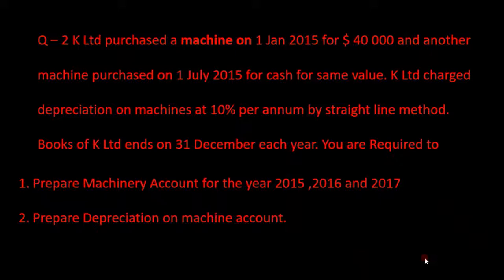So let's take one question. K Ltd purchased a machine on 1 January 2015 for $40,000 and another machine purchased on 1 July 2015 for cash for the same value. K Ltd charges depreciation on machines at 10% per annum by the straight line method and the books of K Ltd end on 31 December each year.